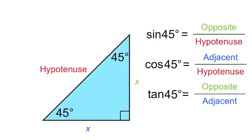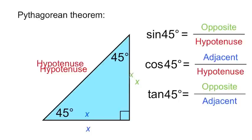Now we'll use the Pythagorean theorem to find the length of the hypotenuse in terms of x. The Pythagorean theorem says that the square of the hypotenuse is equal to the sum of the squares of the other two sides of a right triangle. So the hypotenuse squared equals x squared plus x squared. x squared plus x squared is 2x squared.